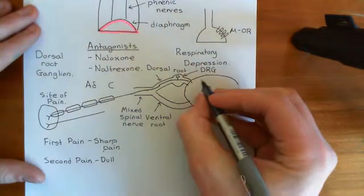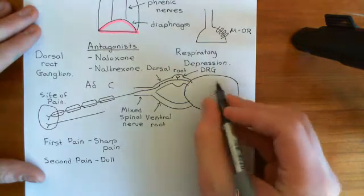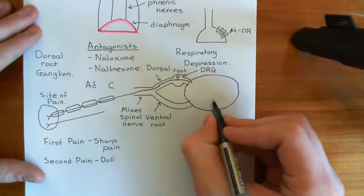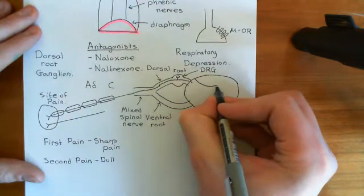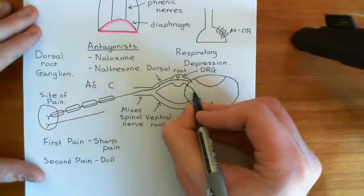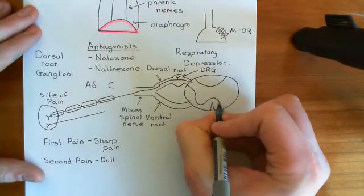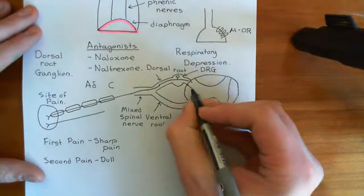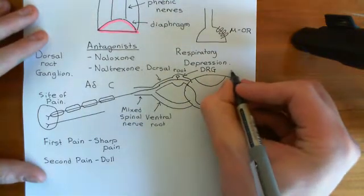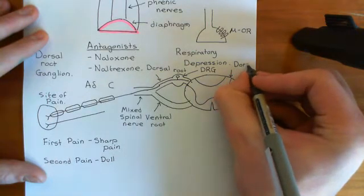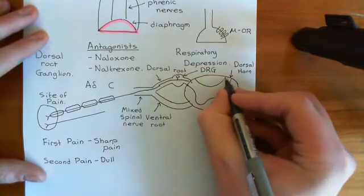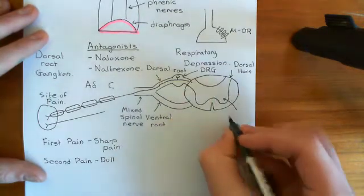The spinal cord can be divided into white matter and gray matter. Gray matter is where you have neuronal cell bodies, and white matter is where you have the axons. The gray matter is shaped in a butterfly-like shape. The posterior extensions of this gray matter are called the dorsal horns, while the anterior extensions are called the ventral horns — you have a dorsal horn and a ventral horn on each side.